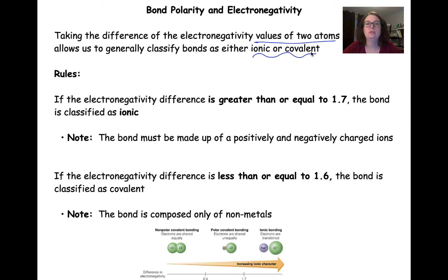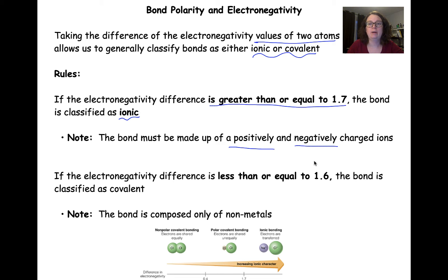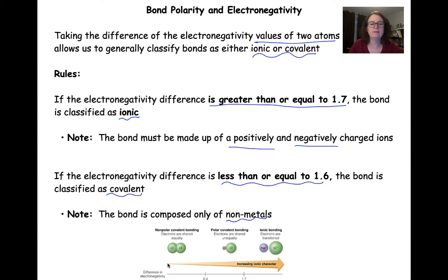This is another way to do that classification. We have some rules to follow: if the electronegativity difference is greater than or equal to 1.7, we consider the bond ionic — it still has to be made up of positively and negatively charged metal and non-metal ions. If that electronegativity difference is less than or equal to 1.6, the bond is considered covalent and it also has to be composed of non-metals. This gives us a spectrum: a difference of zero up to 1.7 is covalent, and greater than 1.7 is ionic.